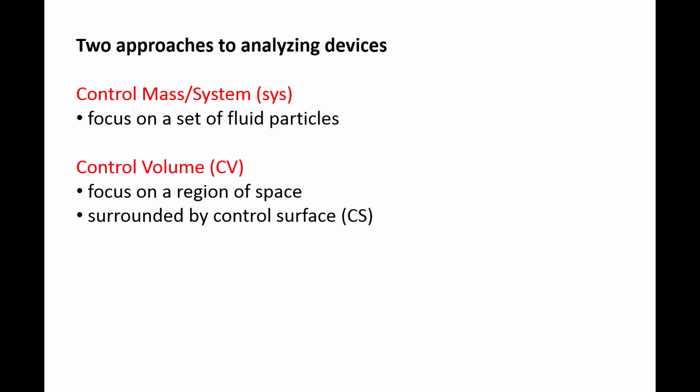The second approach is called the control volume approach, which will be denoted by the subscript CV. In the control volume approach, we focus on the region of space occupied by the device. The control volume is surrounded by a control surface, which is denoted by the subscript CS.